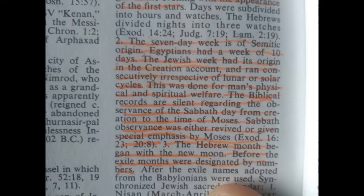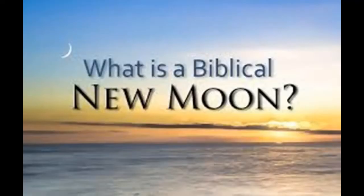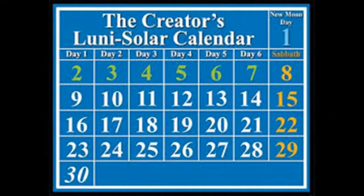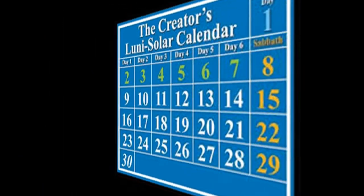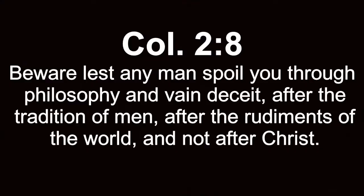So the Hebrew month began with a new moon, and we have to get an understanding of what a new moon is and what it looks like. We already established that within a month there are weeks, within weeks there are days, and the seventh-day count is within a month. Colossians chapter 2 verse 8: 'Beware lest any man spoil you through philosophy and vain deceit, after the tradition of men.' Saturday Sabbath is a tradition of men, after the rudiments of the world and not after Christ — and Christ is the Word, which is the scriptures.